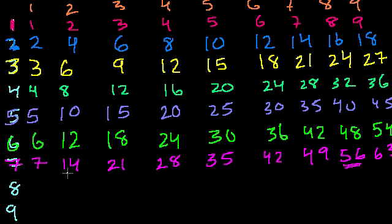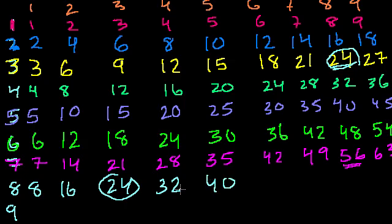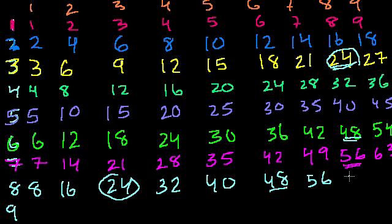8 times tables: 8 times 1 is 8. 8 times 2 is 16. 8 times 3 is 24 — and if you look at 3 times 8 in the table, it's also 24; we're doing things twice because multiplication is commutative. 8 times 4 is 32, 8 times 5 is 40, 8 times 6 is 48, 8 times 7 is 56, 8 times 8 is 64, 8 times 9 is 72.